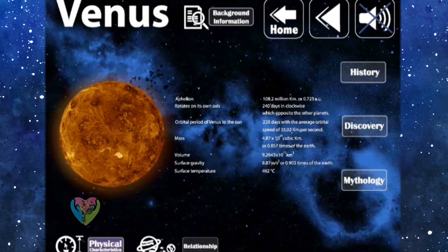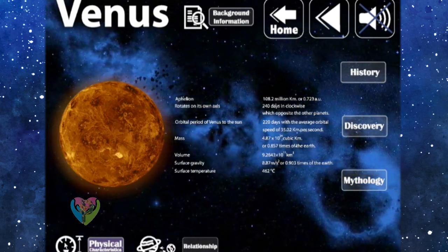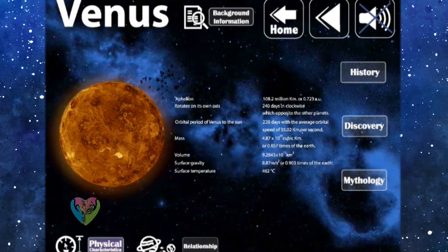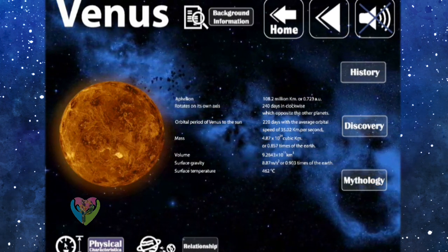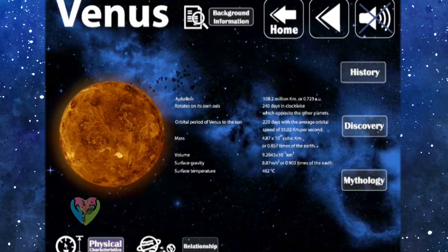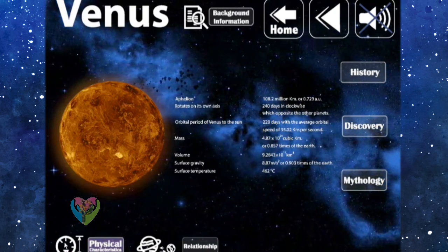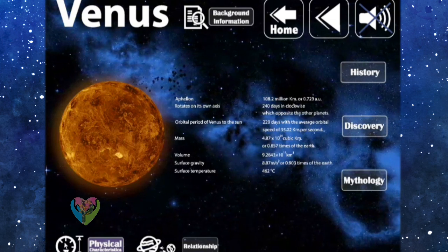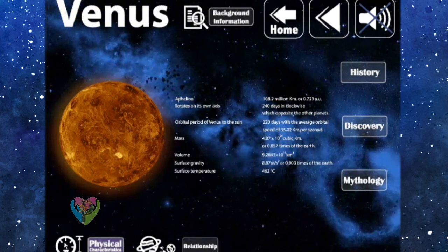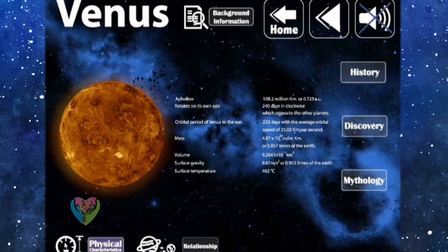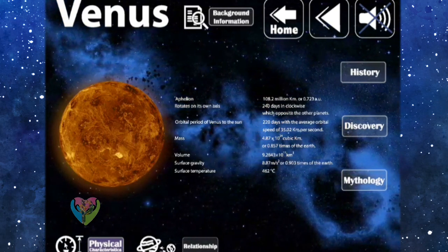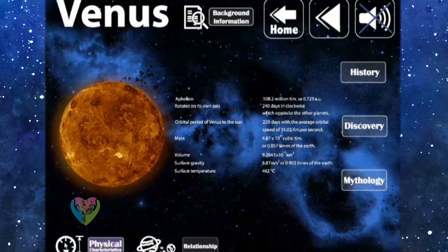But the mean surface temperature of Venus is 462 degrees Celsius, while the Earth is 15 degrees Celsius. Distance from the Sun is 108.2 million kilometers, or 0.723 astronomical units. It rotates on its own axis 240 days clockwise, which is the opposite to the other planets.